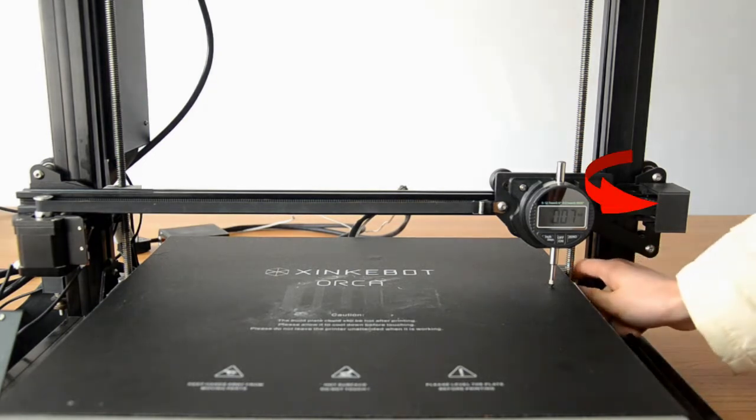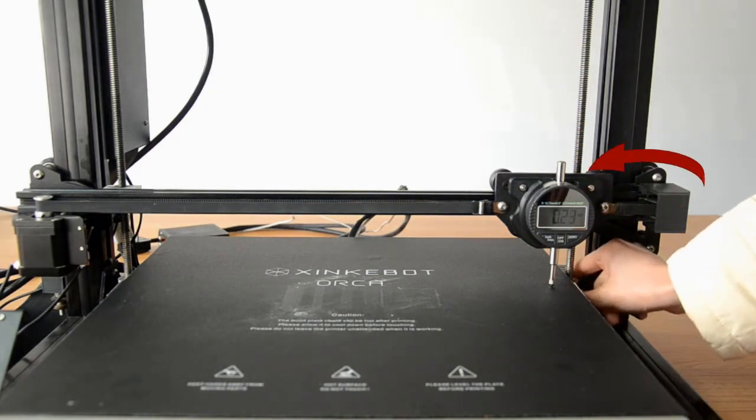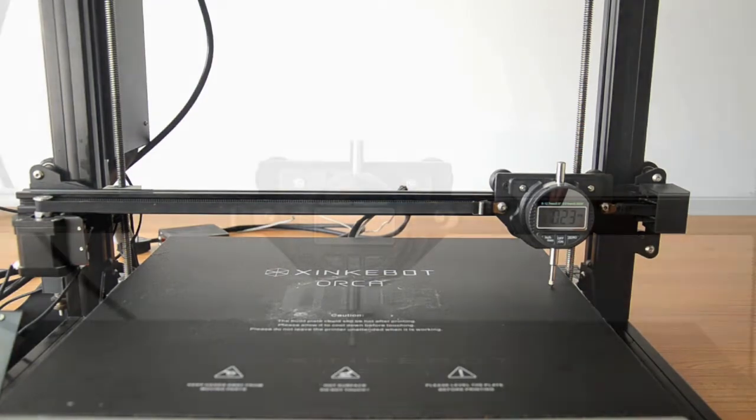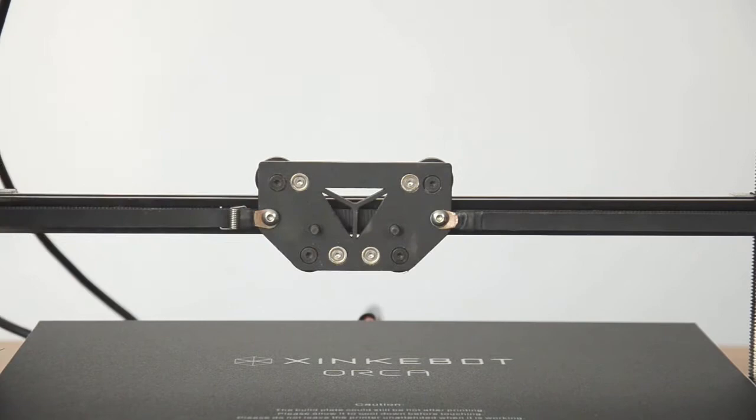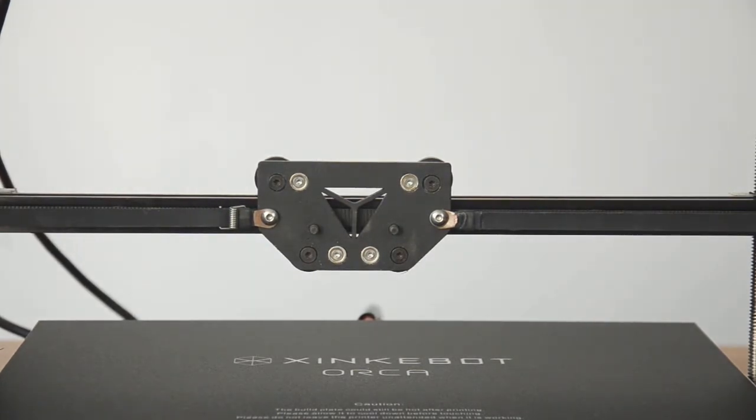So we need to make small adjustments to level the bed by turning the couplings. Now the readings are close enough. We can view it as a level bed.